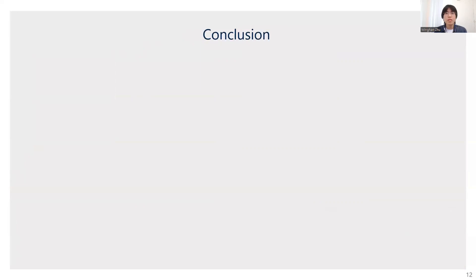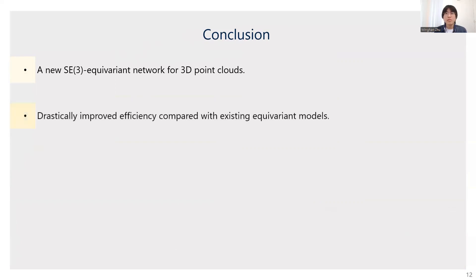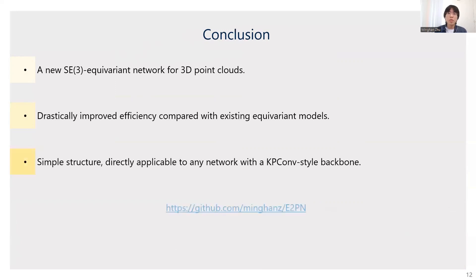In conclusion, we propose a new SE3 equivariant network for processing 3D point clouds. It drastically improves the efficiency over existing equivariant models. Furthermore, it has a simple structure which is directly applicable to any network with the KPConv-style backbone. Please check out our code through the link below. Thank you.